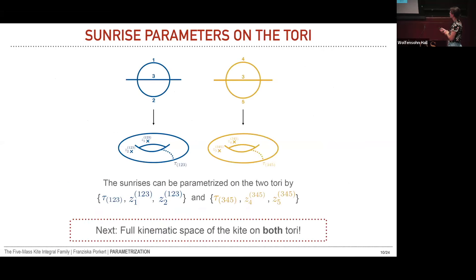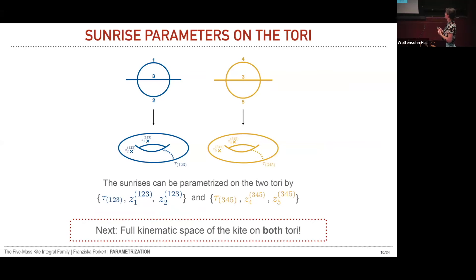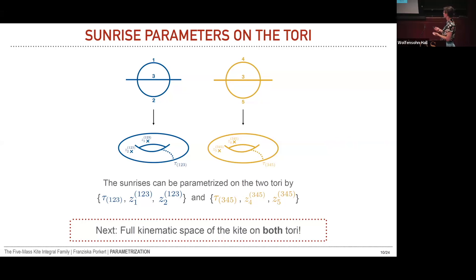For our two sunrise subtopologies, we can parametrize each on its torus by the period tau and two special punctures Z1 and Z2. Overall at this point we have six kinematic parameters, but despite the kite integral family having only five parameters, these are not sufficient to parametrize its full structure. This is because subtopologies such as the eyeballs have more than three parameters but are naturally related to only one of the torii. Parametrizing them partially on one and partially on the other would make the solution more complicated.